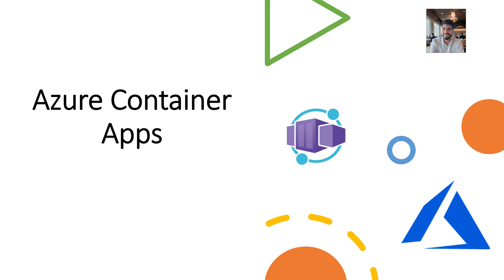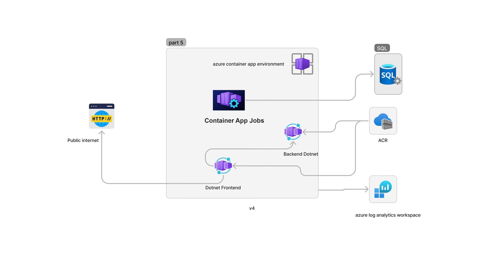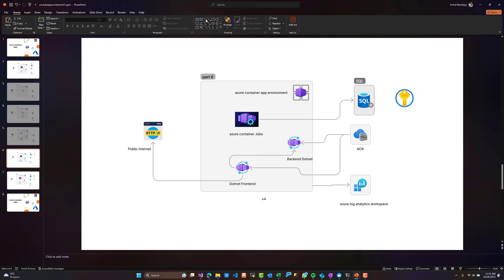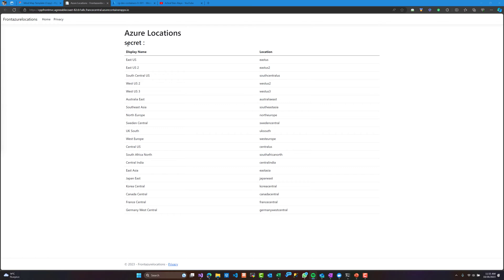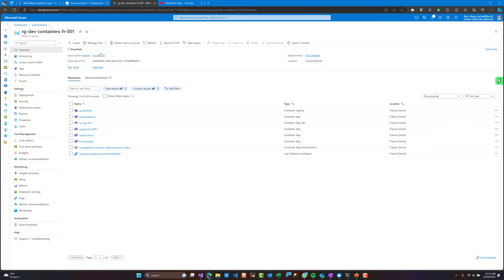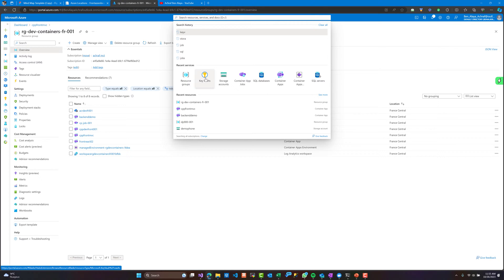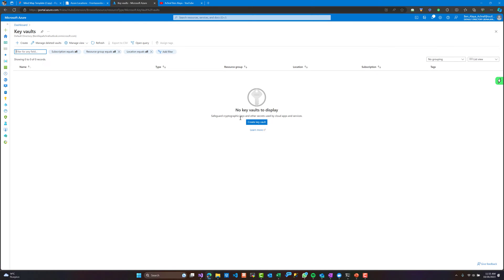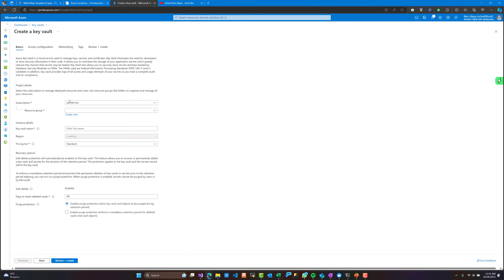Hi everyone, today we continue our course about Azure Container Applications. We are going to add a new item to our old architecture, which is Azure Key Vault, in order to store keys and secrets. In today's demo we are going to use the MVC front-end application to show those secrets, and we are also going to see secrets inside Azure Container Apps and environment variables connected to Azure Key Vault. Let's start by creating a new Azure Key Vault service.